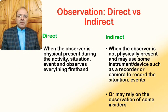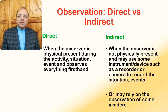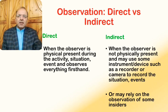Observations could also be direct or indirect. In direct observation, the observer is physically present during the activity and may use instruments or devices such as a recorder or a camera to record situations and events. In some rare cases, one may rely on observation through insiders where direct access to the field or research site is not possible. This is another way of categorizing observation: direct versus indirect observation forms.